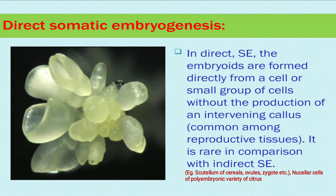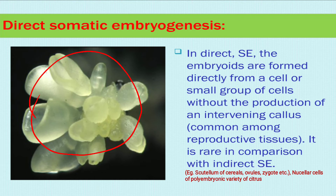In direct somatic embryogenesis, the embryoids are formed directly from the cells or small group of cells without production of an intervening callus, coming among the reproductive tissues. It is rare in comparison with indirect embryogenesis — mostly the indirect method is applied in somatic embryogenesis.